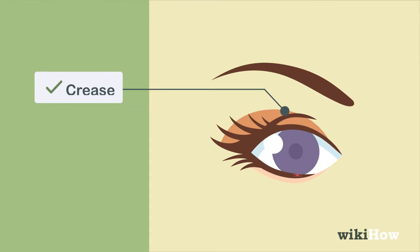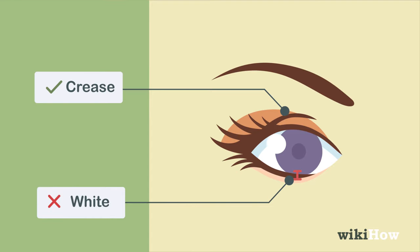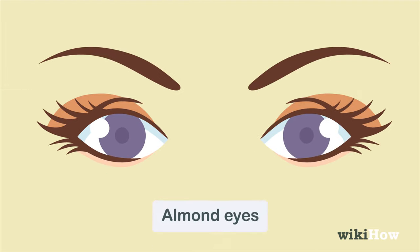If you can't see any white below your irises when you look straight ahead, you have almond eyes.